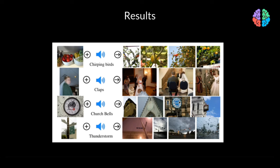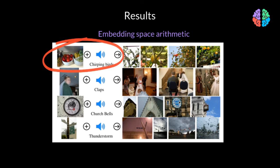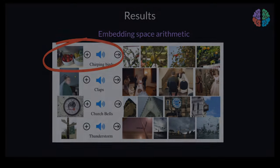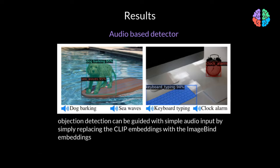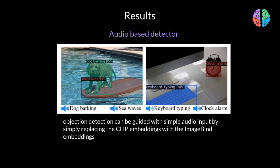We also have the ability to do embedding space arithmetic, where we provide an input image, say an image of berries, and in the audio we say chirping birds, and the output generated image seems to be that of birds sitting on berry trees and chirping. Last but not least, they also show that object detection can be guided with simple audio input, by simply replacing the CLIP embeddings with the ImageBind embeddings, leading to an object detector which is promptable with audio, without any further retraining of any of the models.